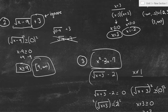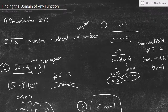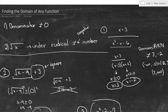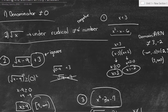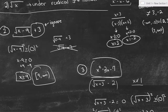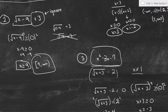So what we did is we just used these two rules. These two rules will hold true throughout any function you are given — just make sure the denominator cannot equal zero, and under the radical cannot be a negative number. I hope this was able to help. This is an important lesson, so I really hope you guys understand this. Let me know if you want more videos like this and if you have any questions. Thanks for watching.